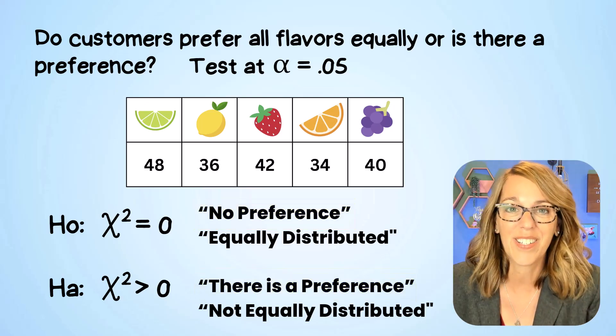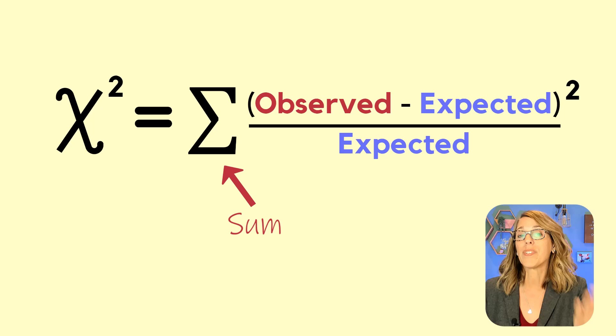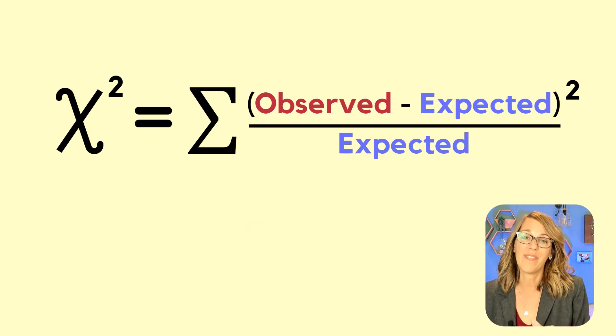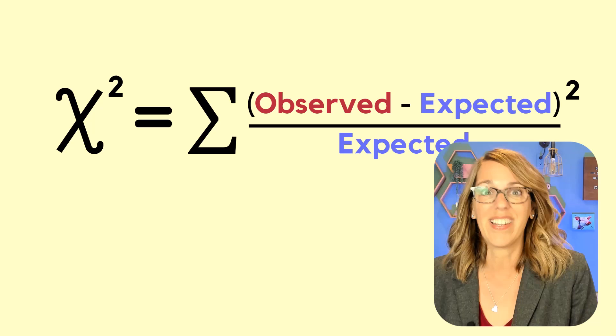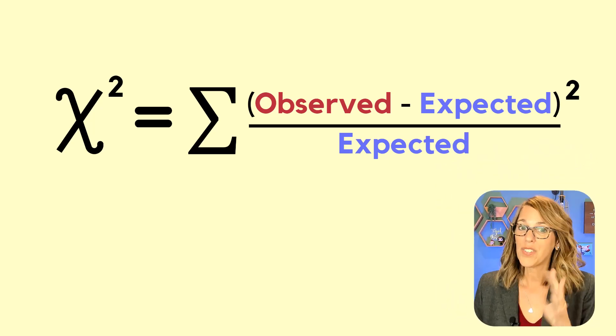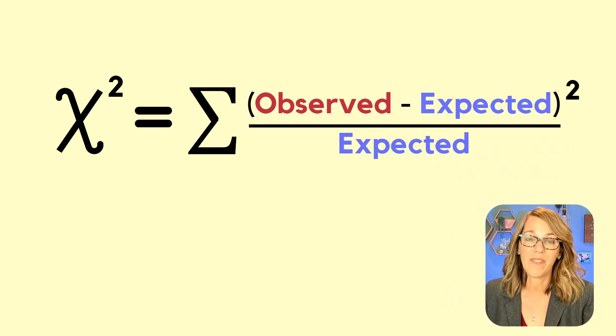But what is chi-square? Chi-square is the sum of all of the observed values minus the expected value squared divided by the expected value. We are not going to do these by hand. So we've got to figure out what those expected values are.